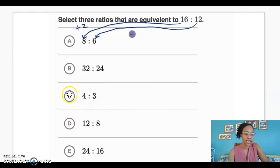Let's look again comparing C, 4 to 3, with E, 24 to 16. 4 times what gives me 24? 4, 8, 12, 16, 20, 24. 4 times 6. And 3 times 6 gives me 18. So E is not an equivalent ratio.